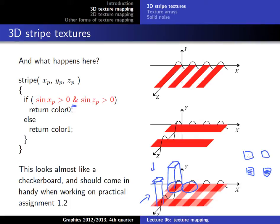A real checkerboard would have the color filled in the other quadrants too. This is basically the idea behind the practical assignment — you just need to change the condition a little bit to achieve that checkerboard pattern. Be careful with the x, y, z axis orientation so that when viewed from the correct side you get the proper checkerboard rather than a line pattern.